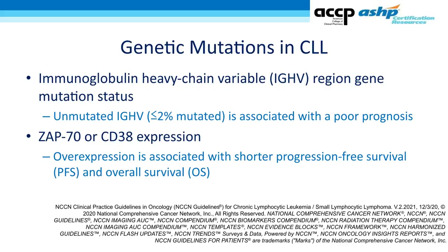The more modern treatment of CLL relies upon genetic mutations and other prognostic markers. The first genetic mutation to consider is the IGHV region, or the immunoglobulin heavy chain variable region. B cells have immunoglobulins — those Y-shaped prongs on the outside — and the heavy chain region of those immunoglobulins can be mutated. In CLL, having unmutated IGHV, defined as less than or equal to 2% of all measured immunoglobulins, is associated with a poor prognosis.